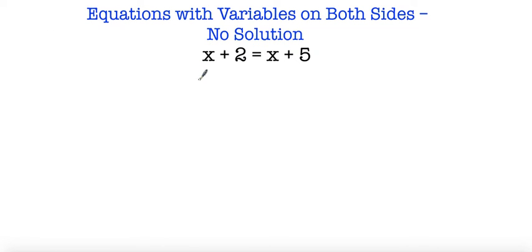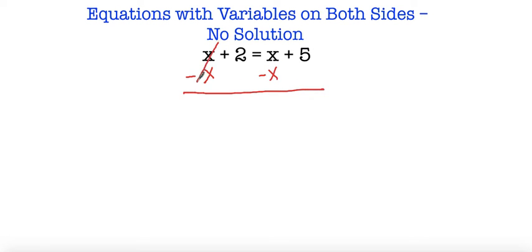Here we have another example: x plus 2 is equal to x plus 5. As you can already tell, if I try subtracting x from both sides, both x's cancel out. So I subtracted x to get all my x's on one side, but they both ended up canceling out. I'm left with 2 is equal to 5, and since we know they're not equivalent, we also have no solution.